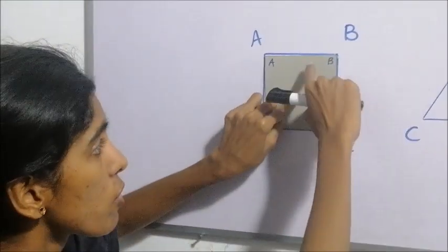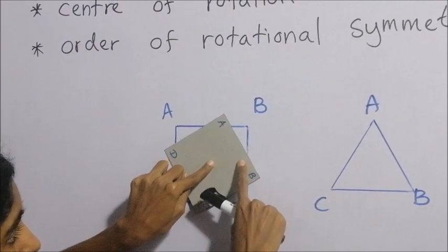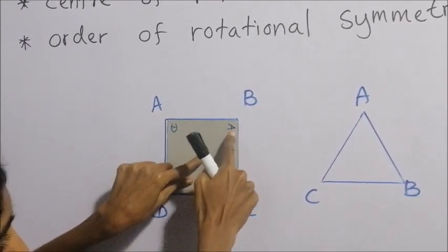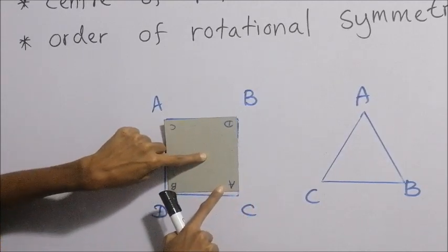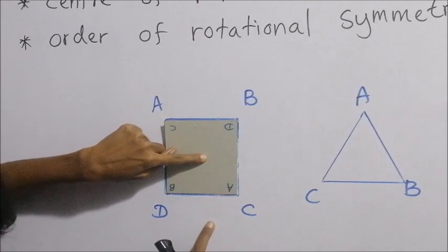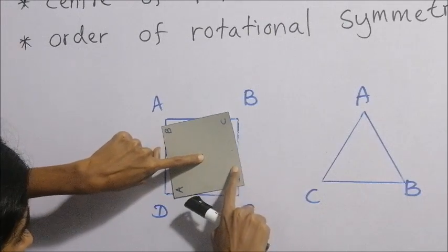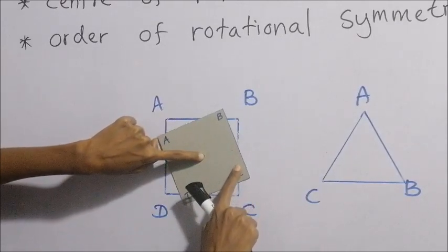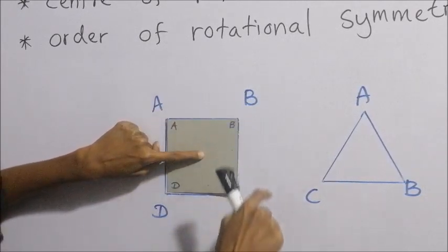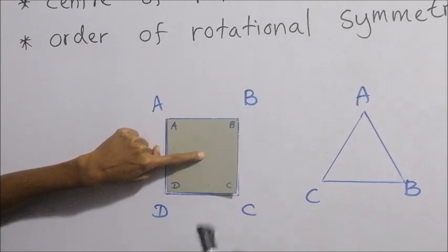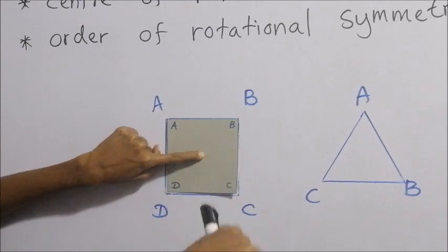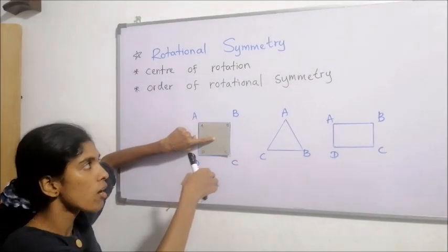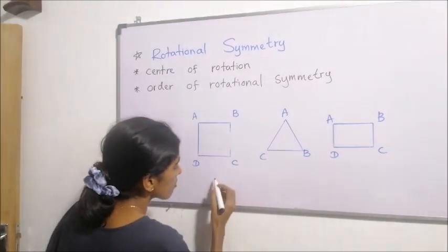I have started rotating the square lamina. One time it coincided — A has moved to a new position. Continuing the rotation — two times it coincided. Continuing further — three times it coincided. And at the fourth time, it completed the full 360-degree rotation. Before coming to its original position, it coincided with the original figure four times in total.